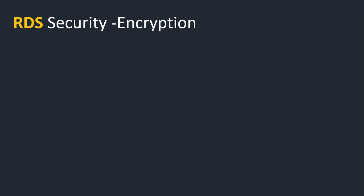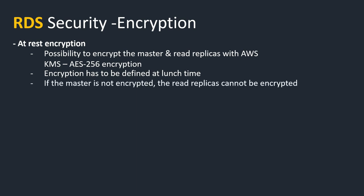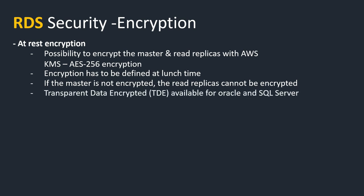We have at-rest encryption, which is data that's not in movement. There is the possibility to encrypt the master database and the read replicas using AWS KMS, which is the Key Management Service of AWS, using AES-256 encryption. When you do encryption, you define it at launch time, and if the master is not encrypted, the read replica cannot be encrypted — that's a common exam scenario. You can also enable Transparent Data Encryption, also called TDE, for Oracle and SQL Server, which provides an alternative way of encrypting your database.